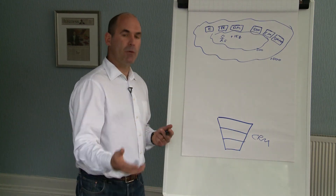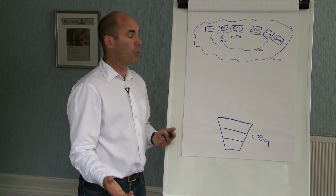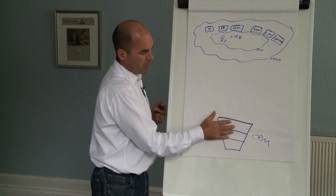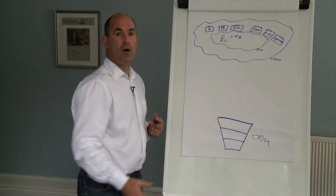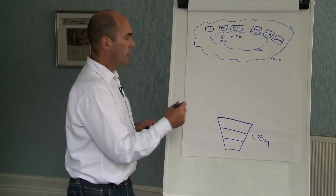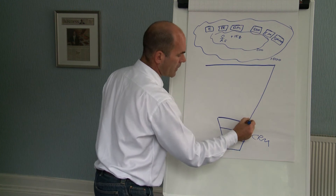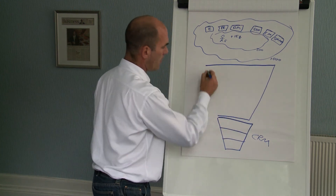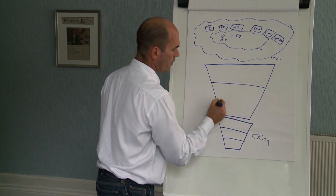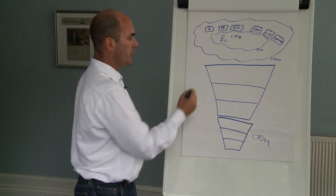Essentially without a marketing automation platform, it's spray and pray. You build a high quality database, you fire higher quality content at them, and you hope that your target market moves along the funnel on their own. However, in between here we have the marketing funnel, and you can split the marketing funnel into three distinct stages.